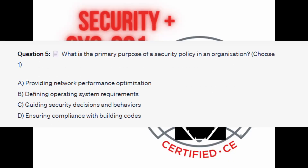Question number five: what is the primary purpose of a security policy in an organization? Choose one. Is it A, providing network performance optimization? Is it B, defining operating system requirements? Is it C, guiding security decisions and behaviors? Or is it D, ensuring compliance with building codes?